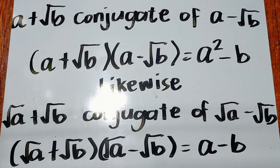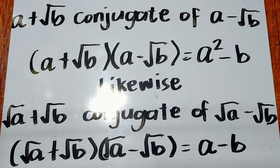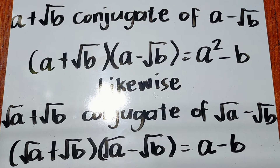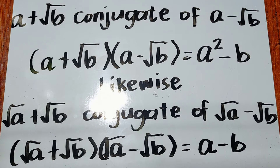The previous examples had monomial denominators. However, binomial denominators sometimes exist, and the conjugate is used to rationalize these denominators. We are going to use the conjugate property to rationalize the denominators of our given expressions.